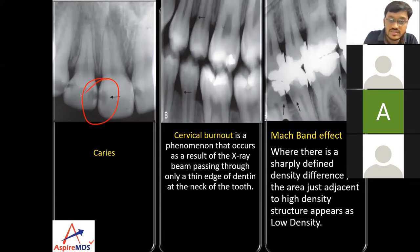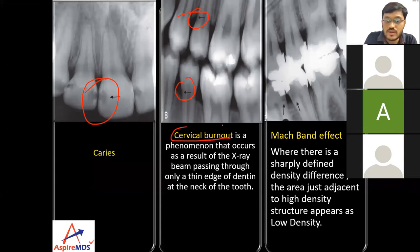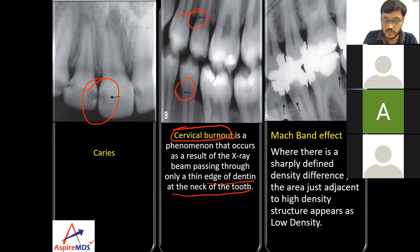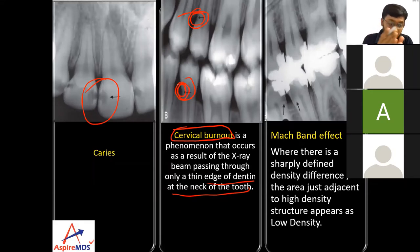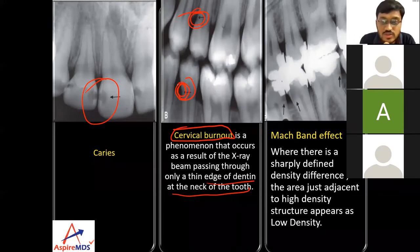Caries is easily visible radiographically. In premolars we have an appearance known as cervical burnout — a phenomenon that occurs as a result of the X-ray beam passing through only a thin edge of dentin at the neck of the tooth, causing these areas to appear radiolucent. It is very important to correlate the radiographic appearance with the clinical appearance to confirm whether it is truly caries or just cervical burnout.